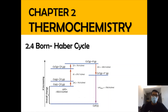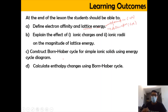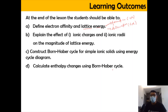Hi, Assalamualaikum and a very good morning. We are still in Chapter 2, Thermochemistry, on the last subtopic, which is 2.4 Born-Haber Cycle. In this video, we're going to look into the definition of electron affinity and lattice energy, where lattice energy can be divided into lattice energy of formation and lattice energy of dissociation. We're also going to explain the effect of ionic charges and ionic radii on the magnitude of lattice energy, and construct and calculate enthalpy changes using the Born-Haber Cycle for simple ionic solids.